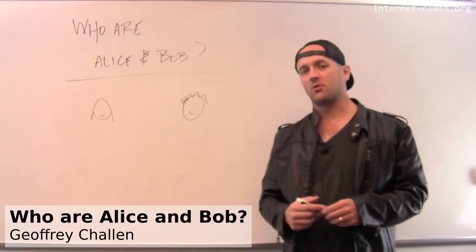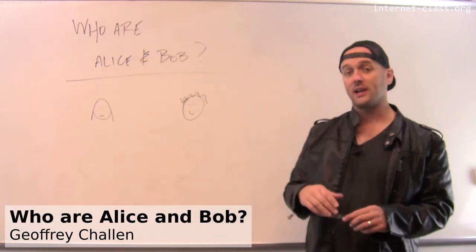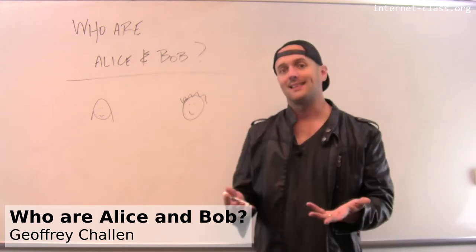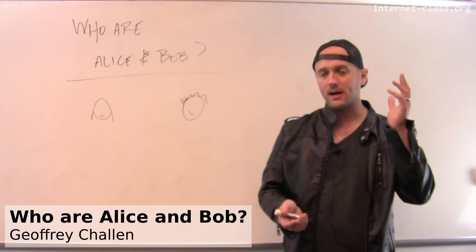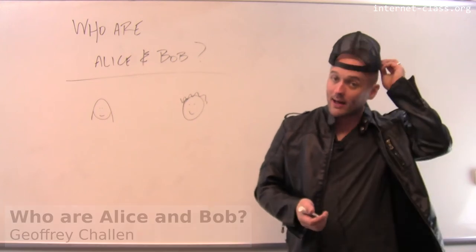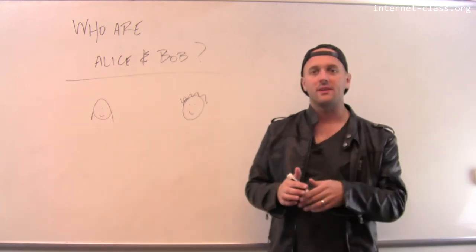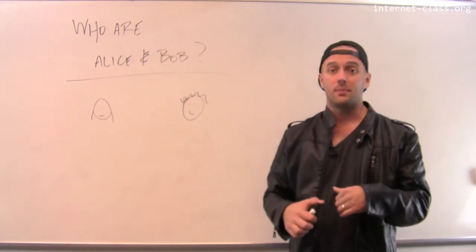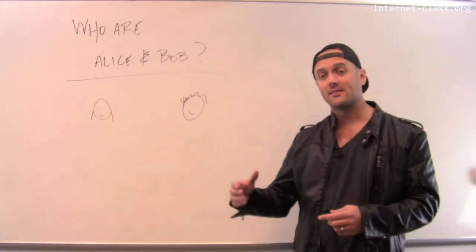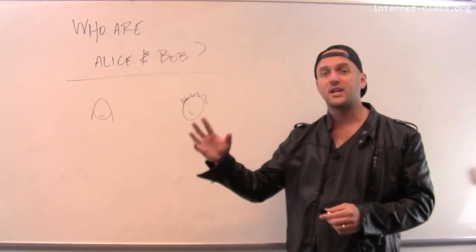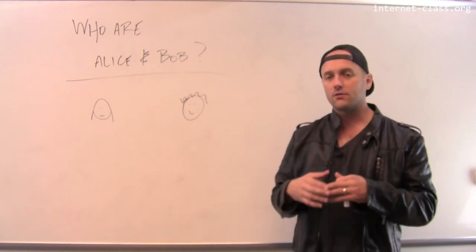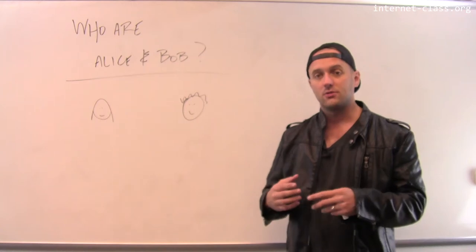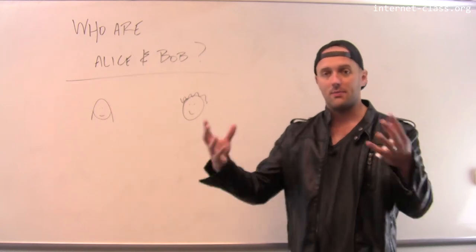When we start talking about encryption, we're going to start talking about a couple of people very regularly, and those people are Alice and Bob. Alice and Bob are not famous people that invented various types of internet encryption or derived some of the basic algorithms in this area. Alice and Bob are fictional characters that are used frequently in scenarios involving attempts to enable some type of encryption online.